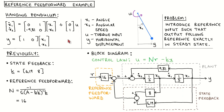The problem is to introduce the reference input such that the output follows the reference input exactly in steady state. We have previously designed the state feedback gain vector k such that both the closed-loop poles are located at minus 4, which means that the closed-loop system is critically damped. We have also calculated the reference feedforward gain m that would let the output y follow the reference input r exactly in steady state.